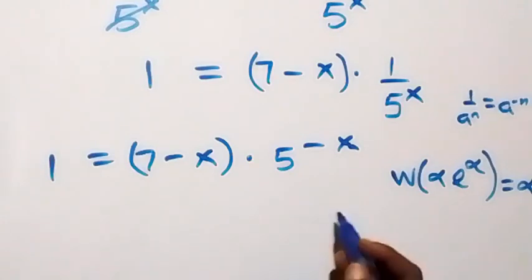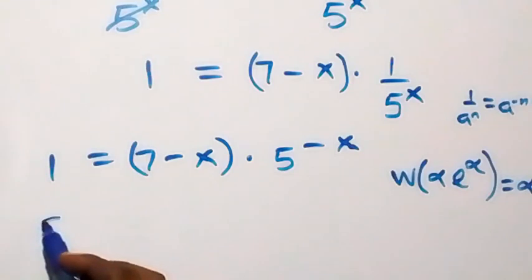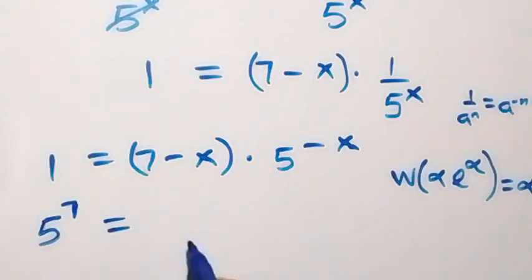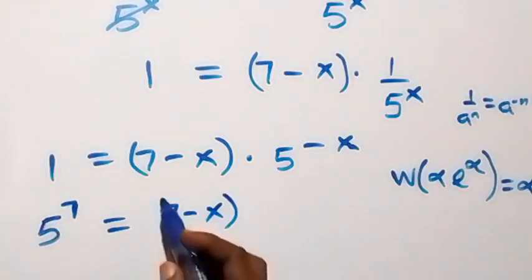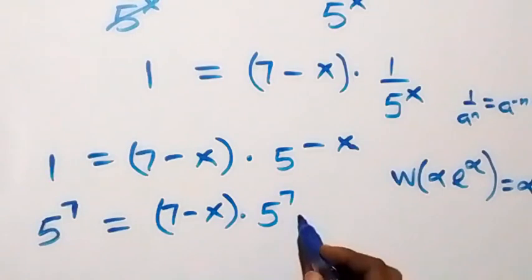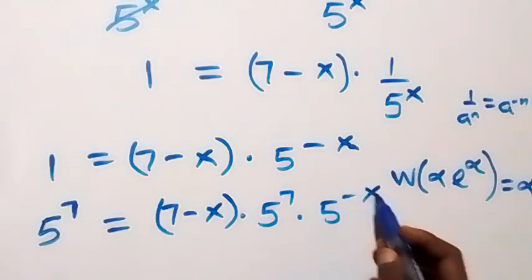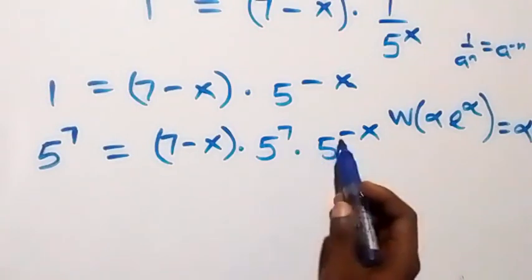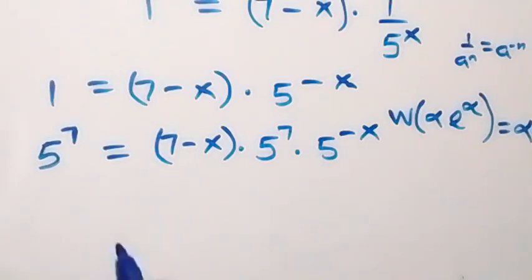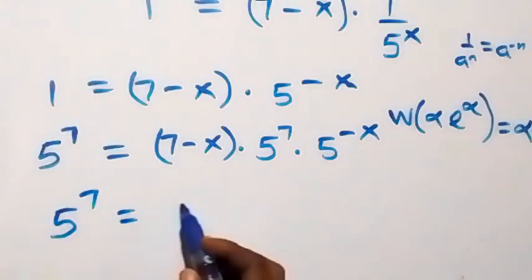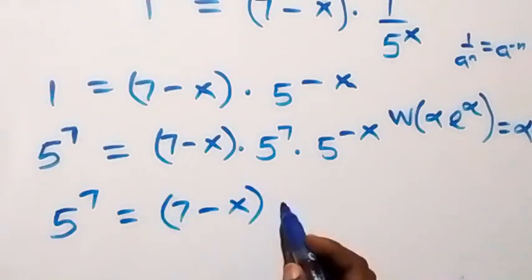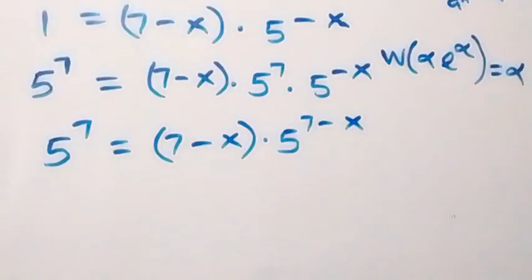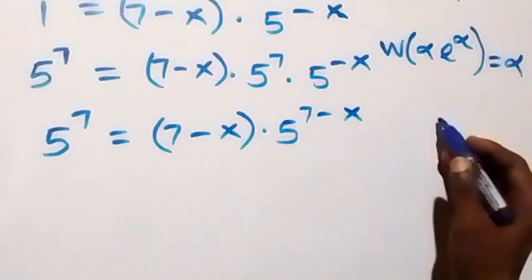This implies that we multiply both sides by 5 raised to power 7. This side times 5 raised to power 7 gives 5 raised to power 7, and on the right we have 7 minus x times 5 raised to power 7. Since we have the same base, the power becomes 7 plus (minus x), which is 7 minus x. So we have 5 raised to power 7 equals 7 minus x times 5 raised to power (7 minus x).